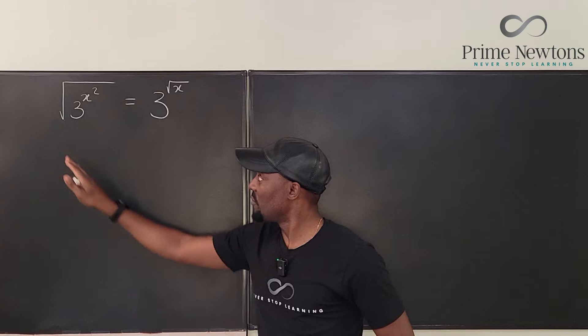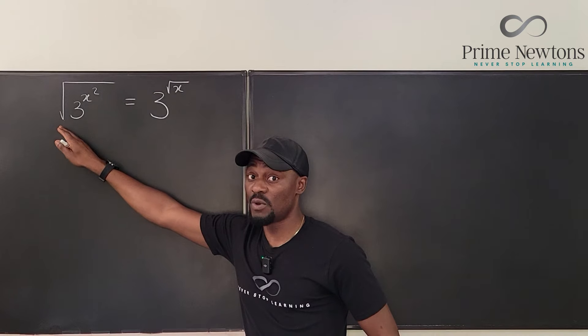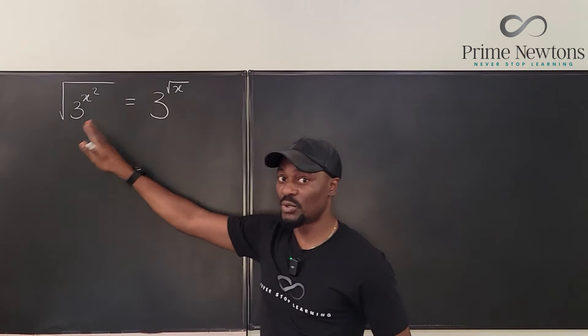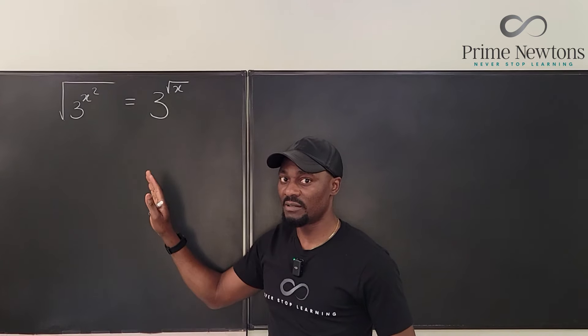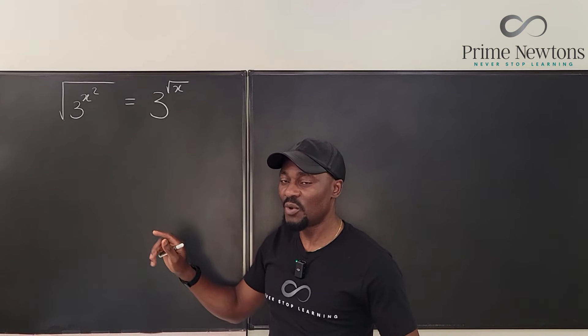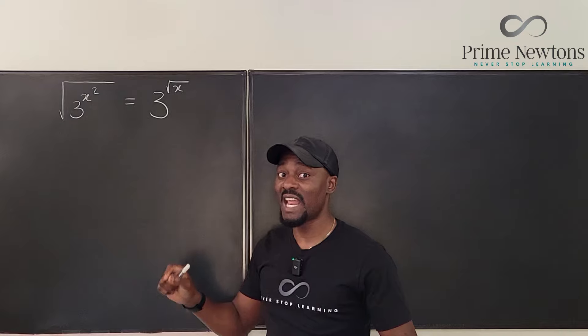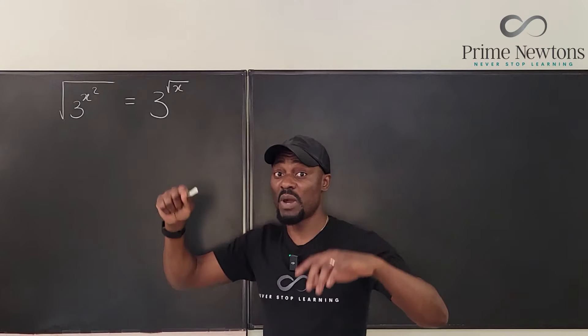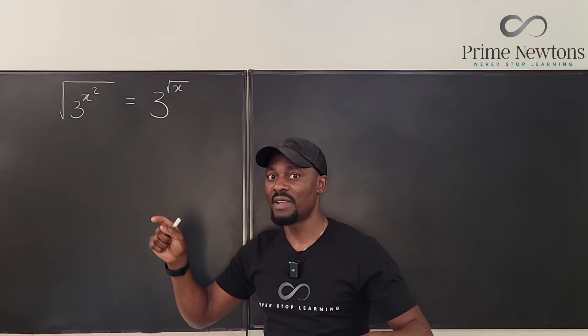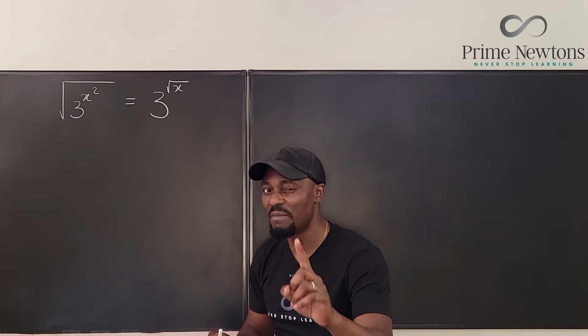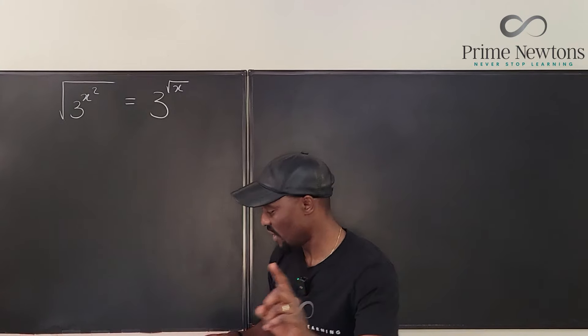There are two ways to get rid of the square root sign. One is to square both sides; the second is to rewrite it as raised to power one-half — and that's where there might be a problem.